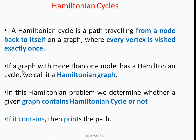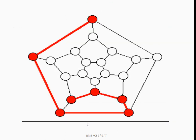Some graphs may have Hamiltonian cycles and some may not. If a graph has more than one node and contains a Hamiltonian cycle, we call it a Hamiltonian graph. Using backtracking, we will apply the Hamiltonian cycle method to find whether a given graph is a Hamiltonian graph — that is, whether it contains a Hamiltonian cycle or not.